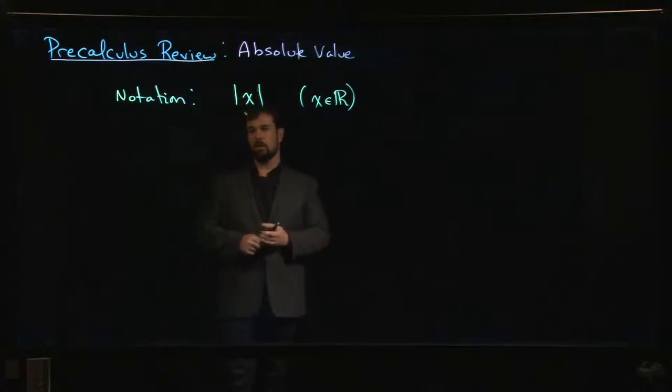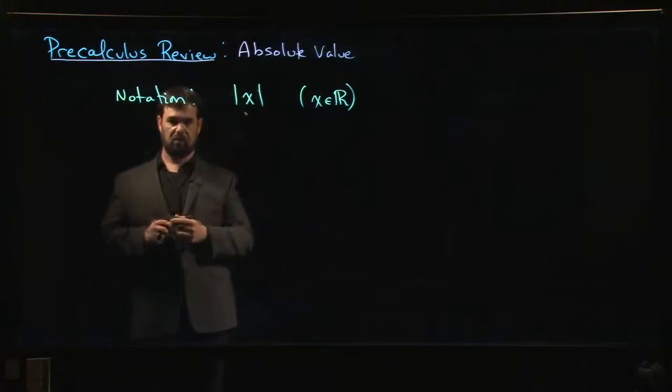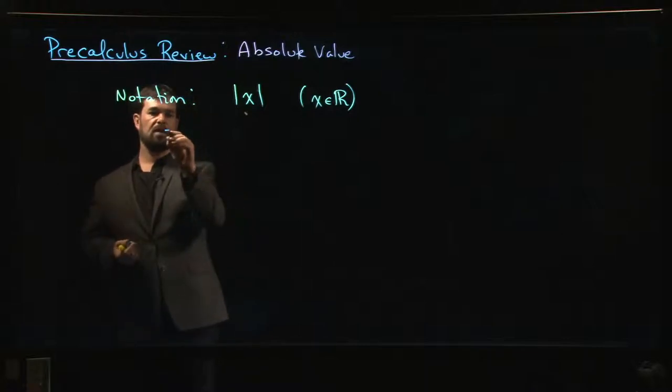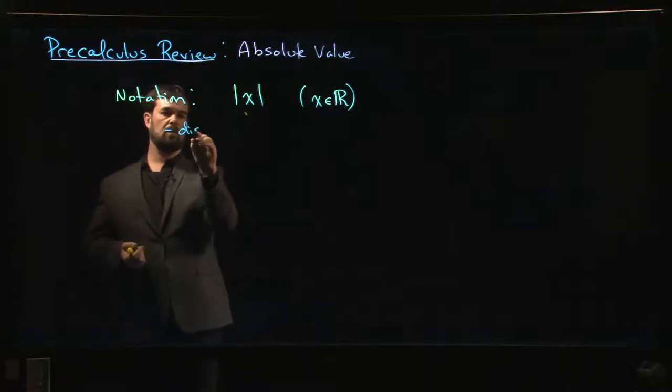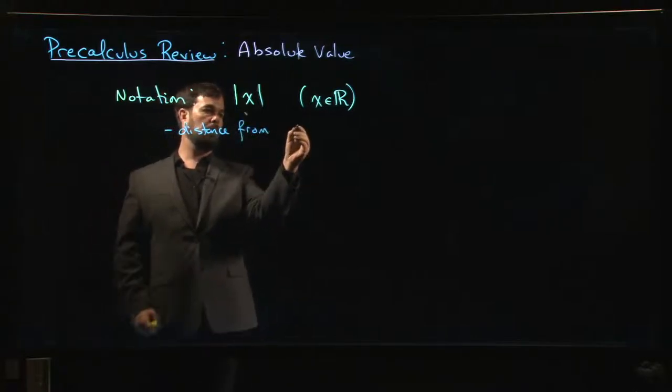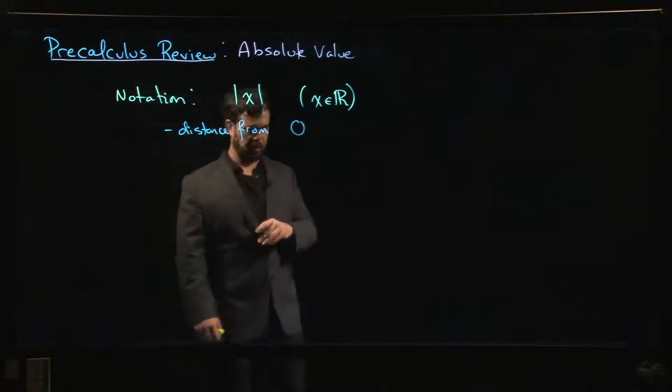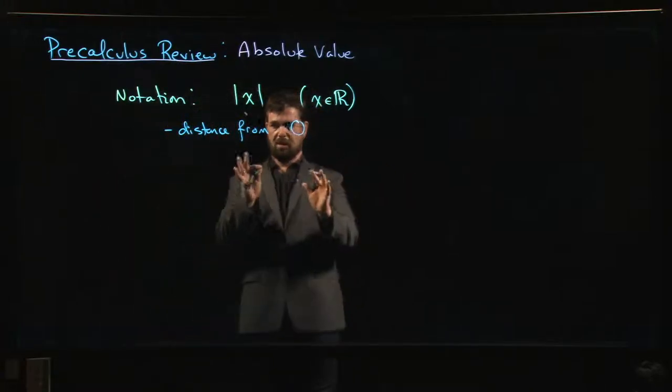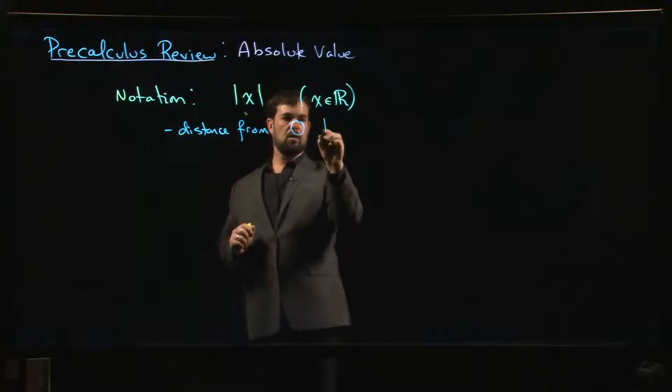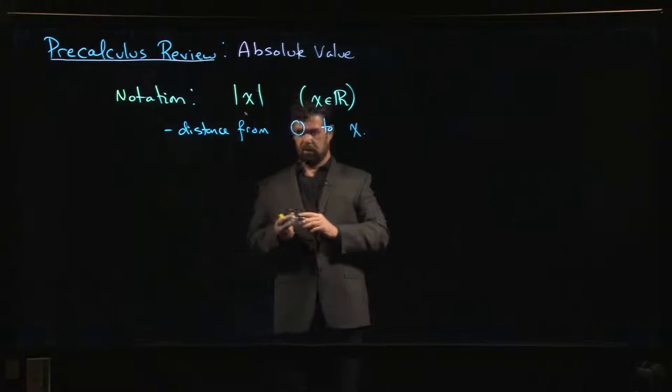So what does that mean? There's a number of ways of interpreting absolute value. One of the simplest ways is to think of this as distance. You can think of this as the distance from 0. Zero is kind of this touchstone on the real number line. It's in the middle, this reference point. It's the distance from 0 to x. That's one way of describing it.